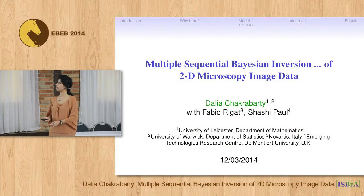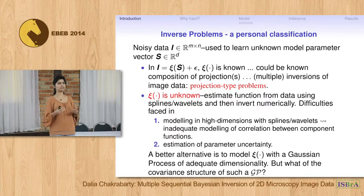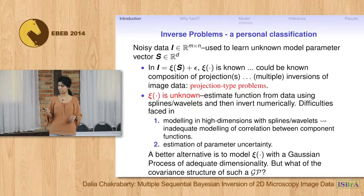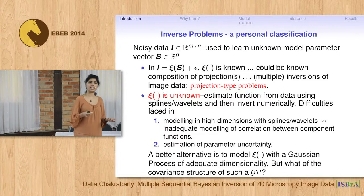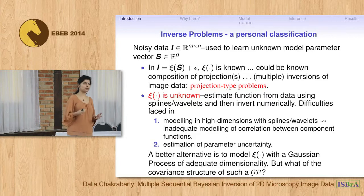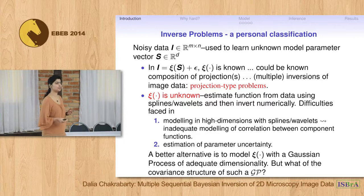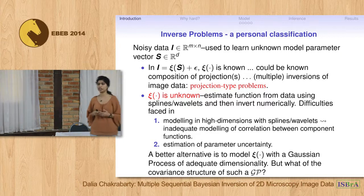I thought I should talk today about an inverse problem — a harder than usual inverse problem. My interest is in learning some model parameters, collected into a model parameter vector S, by inverting the data I have at hand. This data comprises measurements of the observable I. I have a personal classification scheme for inverse problems: type 1 problems are those where the functional relationship between I and S is known.